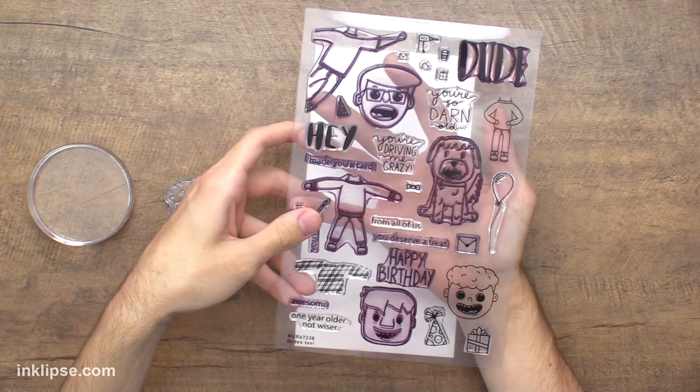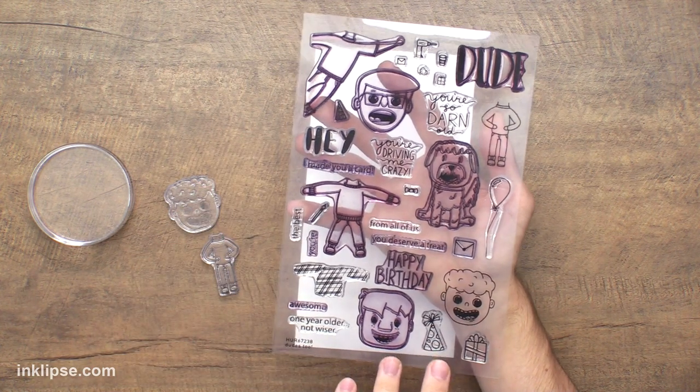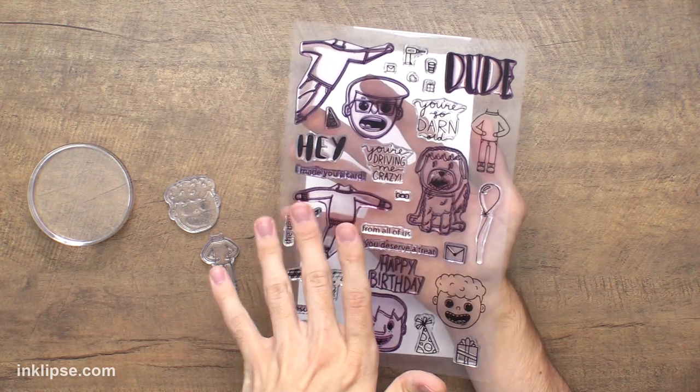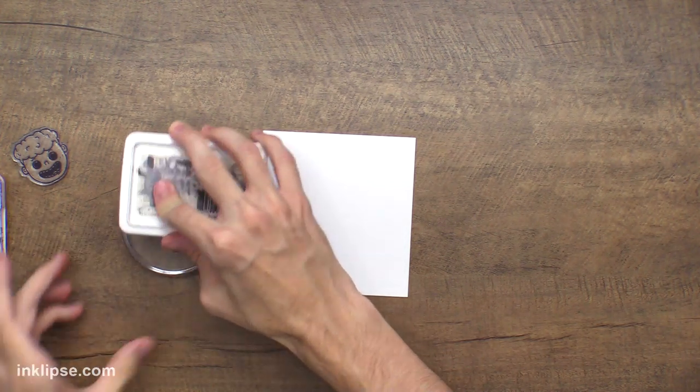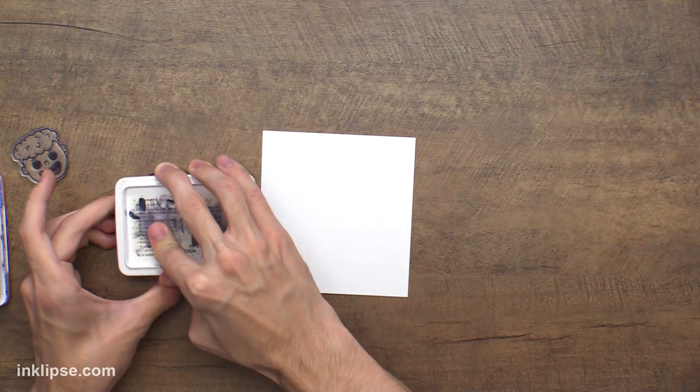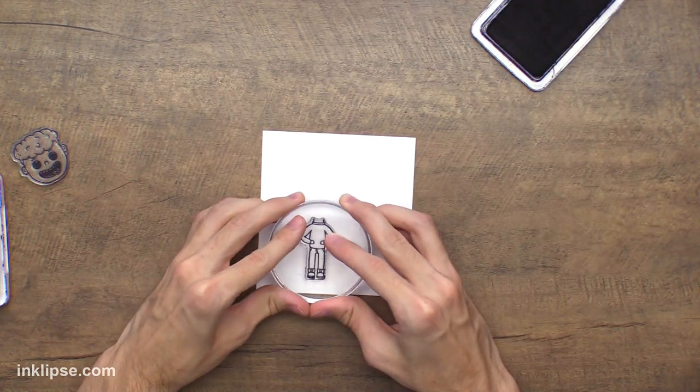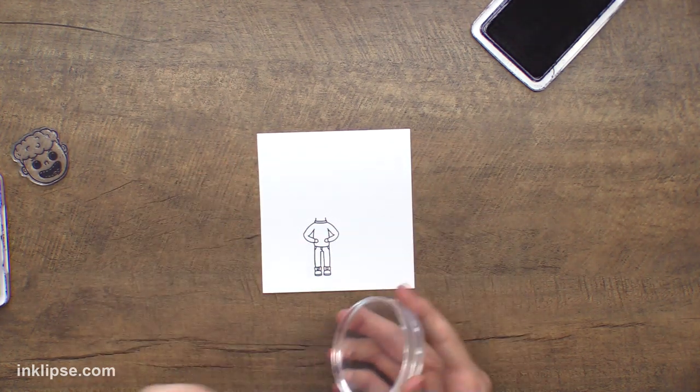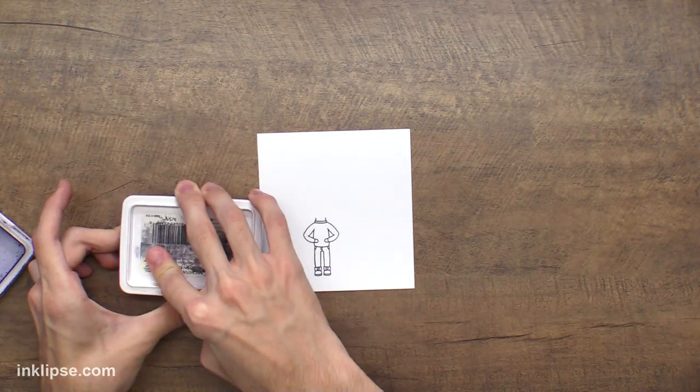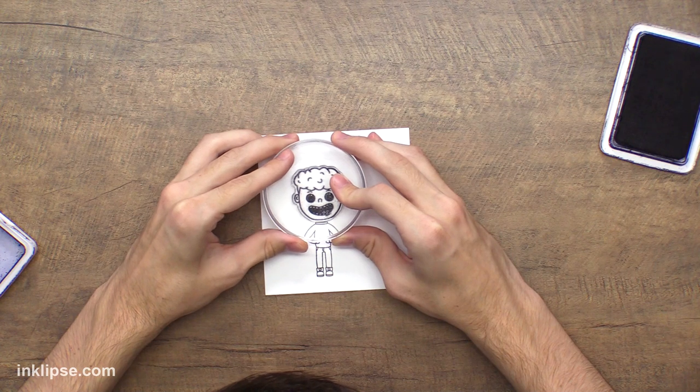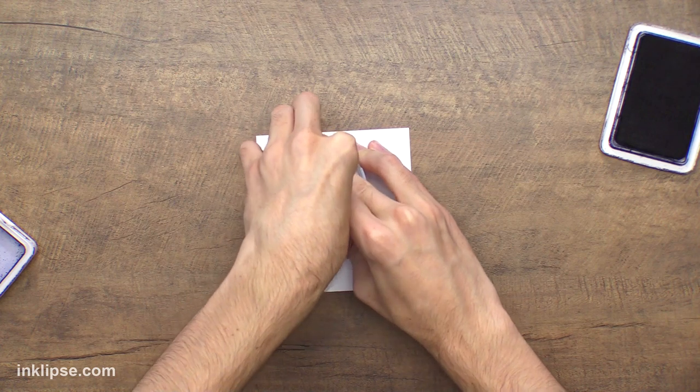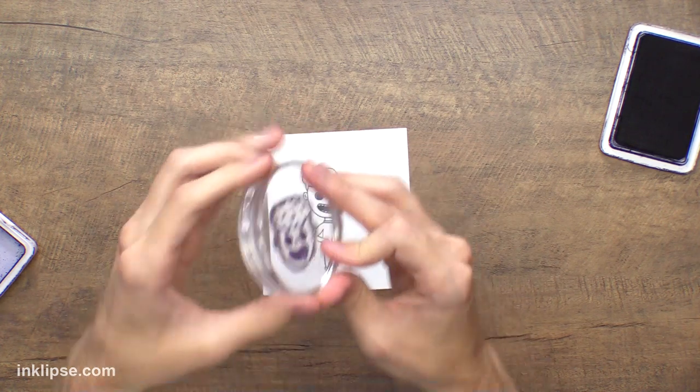Now let's stamp some of the images from the dudes 2 stamp set. There's three separate heads and different bodies, so you can customize it with all these little pieces to fit whoever you're giving the card to. There's not tons of masculine sets in the industry, so this one's tons of fun. I'm going to grab the body first, stamp it down with some archival ink because we're going to be watercoloring later. For the head image, I like to get really low with my image so I can see right through the acrylic block. I'm going to stamp it down on my image, make sure it's lined up, and give it really good pressure.